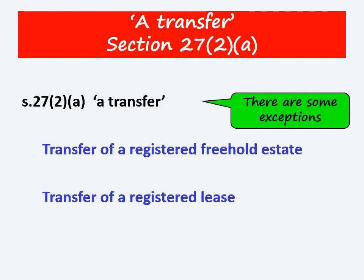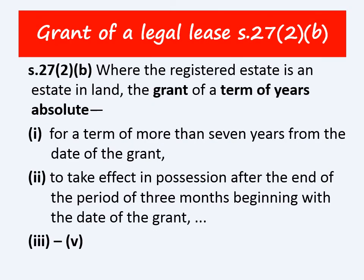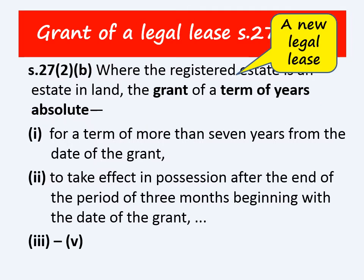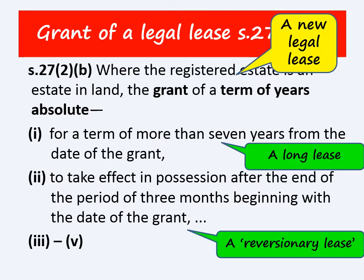The next one is subsection 2(b), which deals with the grant of a term of years absolute — that is, a lease. There are five types of leases which must be registered under subsection (b), but we're going to concentrate on the first two most commonly encountered in assessments: long leases and reversion leases.